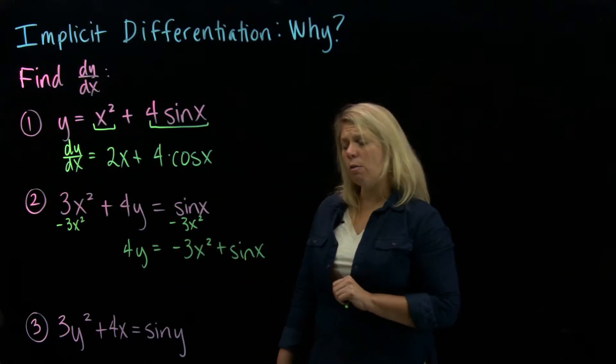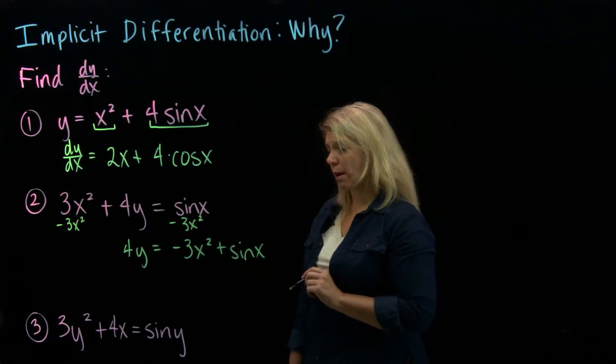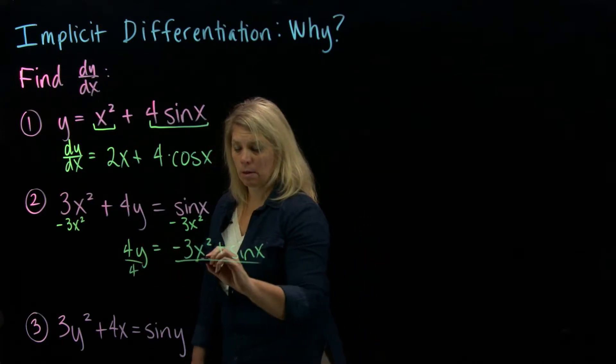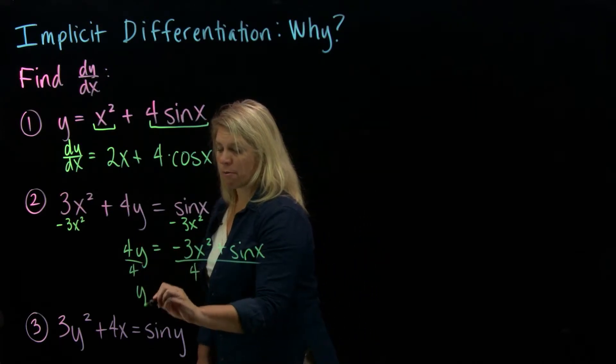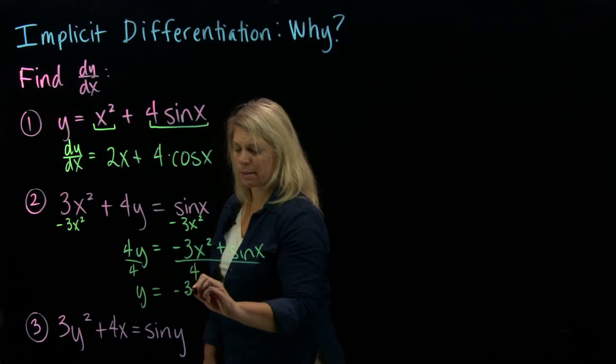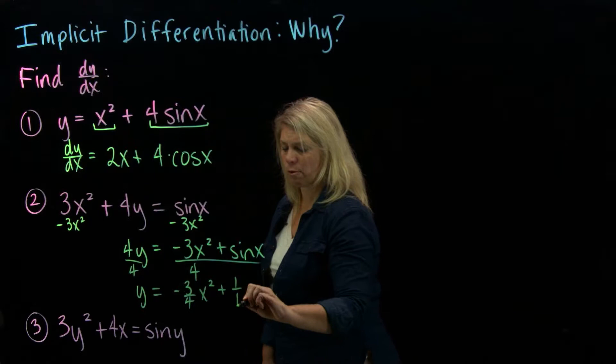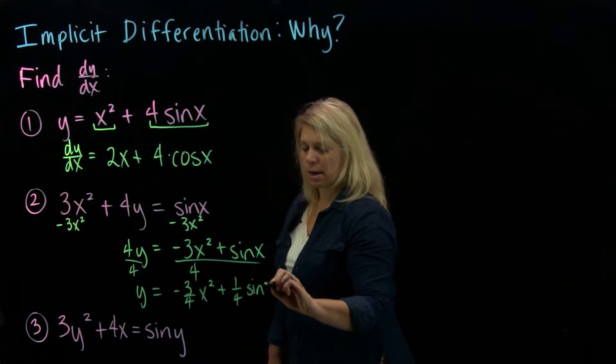And then divide through by 4, or maybe multiply through by 1 fourth. Remember to do that for all the terms here. So I would have y equals, maybe I'll write this as negative 3 fourths x squared plus 1 fourth sine of x.